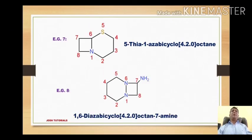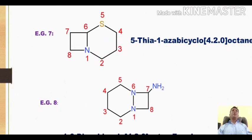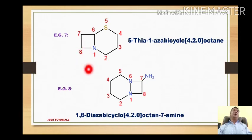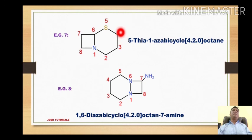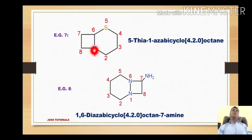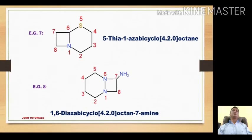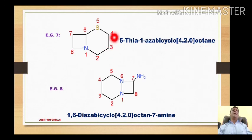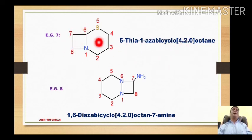Example 7 is found in cephalosporins. Again a bicyclic ring system; bridged atoms are nitrogen and carbon, so numbering starts with nitrogen through the large ring: 1, 2, 3, 4, 5, 6, 7, 8. Sulfur at position 5 is named '5-thia'; bridged nitrogen is '1-aza'. Total 8 atoms gives 'octane'. Distances: 4, 2, and 0. The name is 5-thia-1-azabicyclo[4.2.0]octane.